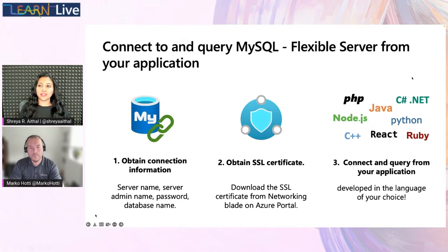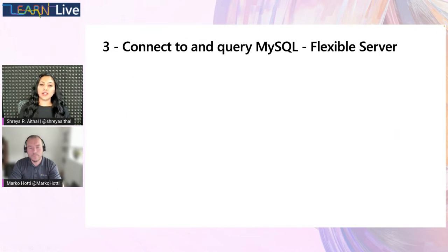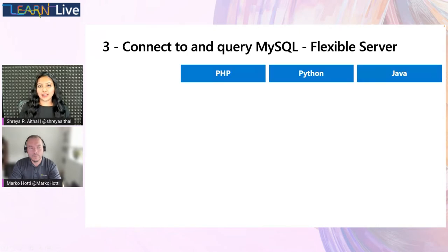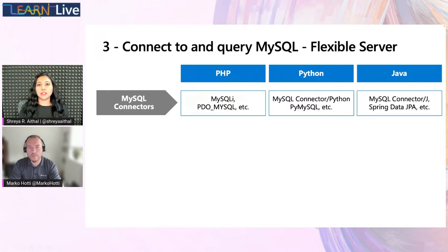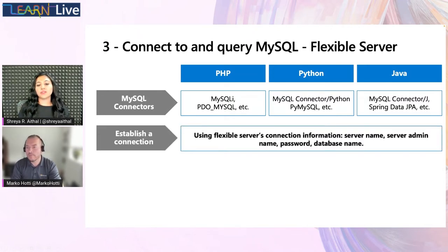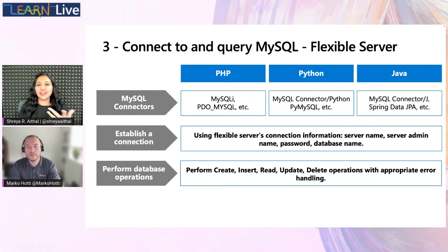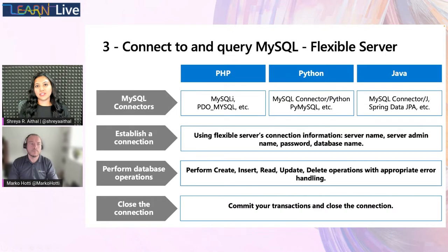The second step is obtaining the SSL certificate — SSL is enforced by default for Azure Database for MySQL Flexible Server. Just download the SSL certificate and save it somewhere accessible by the application. The third step is to connect: code your application to connect to MySQL Flexible Server. Make sure you have MySQL connectors installed — they're extensions or classes that give you methods to connect to MySQL Server. Use the corresponding methods to establish a connection, then perform your database operations: create, insert, read, update, delete. Then commit transactions and close the connection.